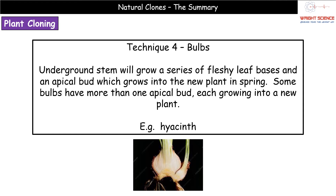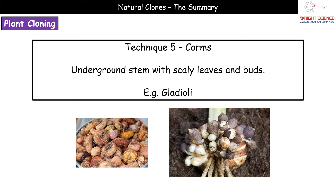The fourth technique uses bulbs. A bulb is an underground stem that grows fleshy leaf bases, as seen in a hyacinth. The main bulb produces additional smaller bulbs off the side, each with a fleshy leaf base and an apical bud that grows upward into a new plant in spring. Depending on the plant, there may be a single or multiple apical buds, and each one grows into a new plant.